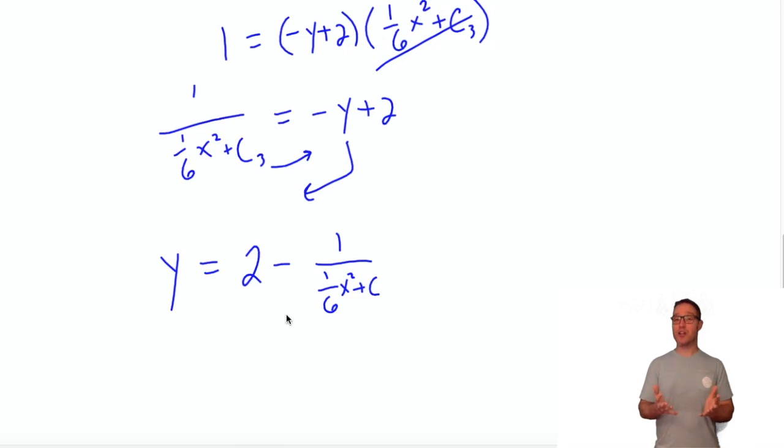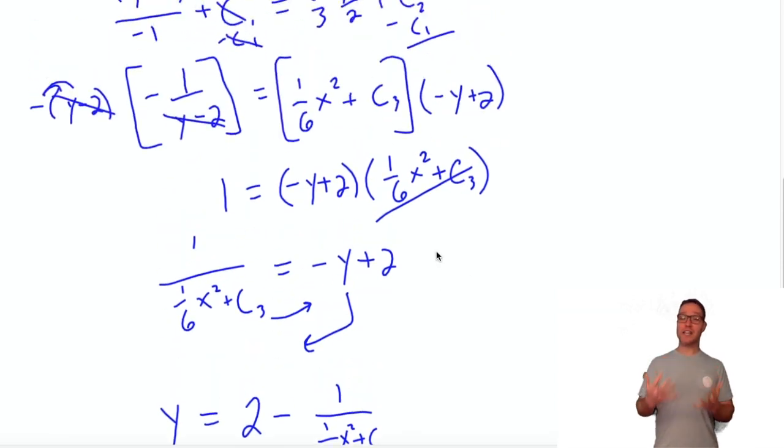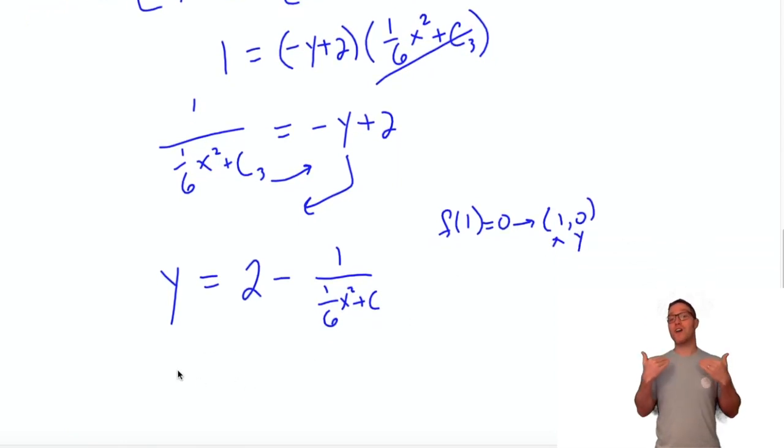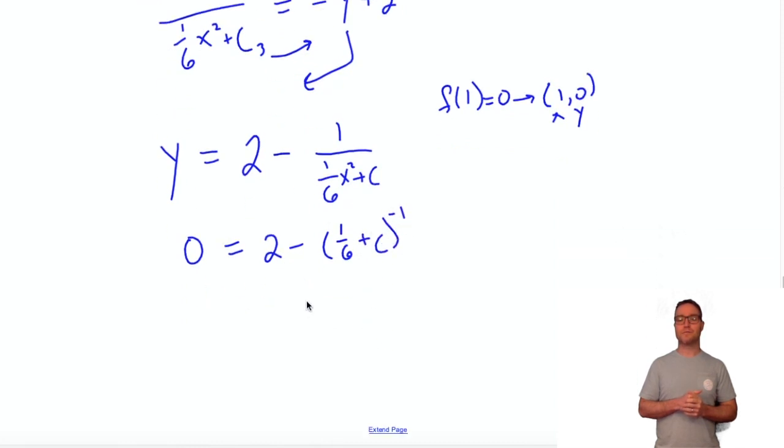Once you have the general solution, which is y equals something in terms of x, I'm going to plug in the particular value they gave us - the initial value (1,0). Plug that in for y and x and we can find out what the constant is. If I plug in 1 for x and 0 for y, let's see what I get. I'm making the fraction to the -1 power. I'm going to add that over to the left-hand side.